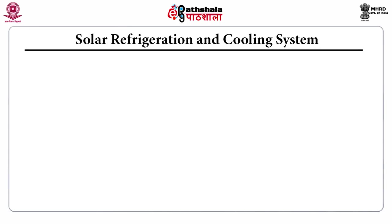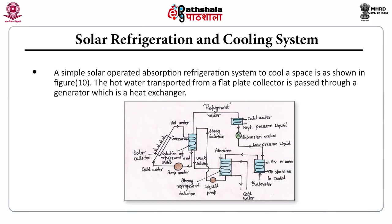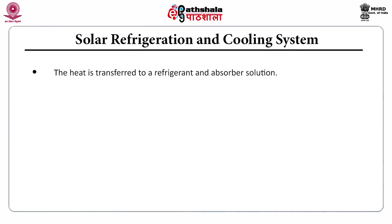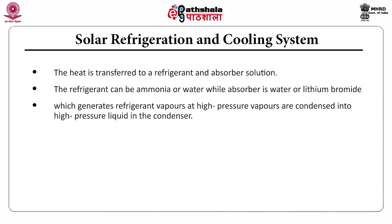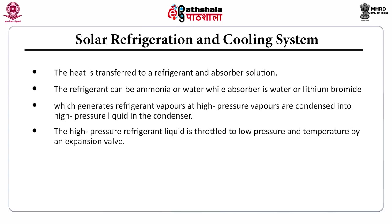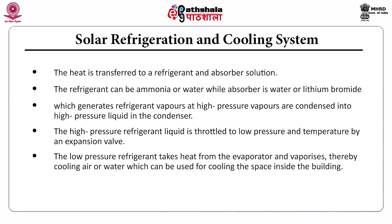Solar refrigeration and cooling: a solar-operated absorption refrigeration system uses hot water from a flat plate collector passed through a generator heat exchanger, transferring heat to a refrigerant-absorber solution. The refrigerant can be ammonia or water while the absorber is water or lithium bromide. High pressure refrigerant vapors are condensed to liquid in a condenser, then throttled to low pressure and temperature by an expansion valve. The low pressure refrigerant takes heat from an evaporator and vaporizes, thereby cooling air or water used for space cooling inside the building.